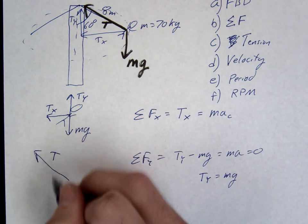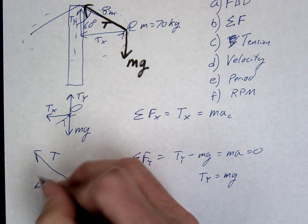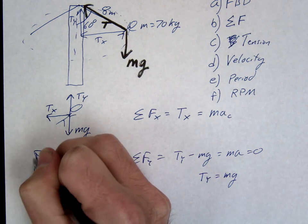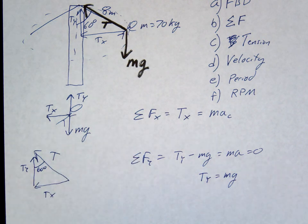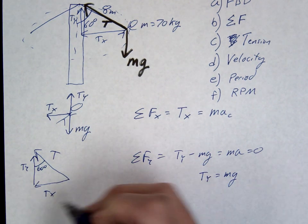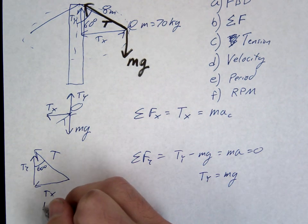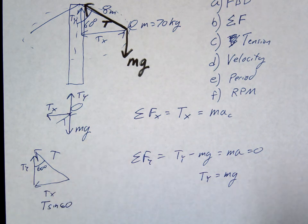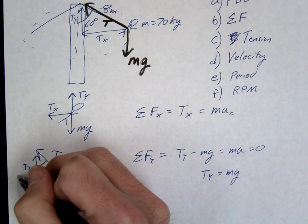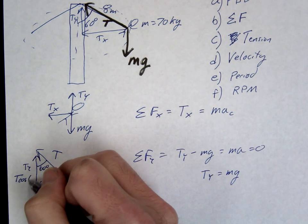So if this is T, this is Tx, and this is Ty, and this is 60, what can we say is true about Tx? T sine of 60. And what's going to be true of Ty? T cosine of 60.